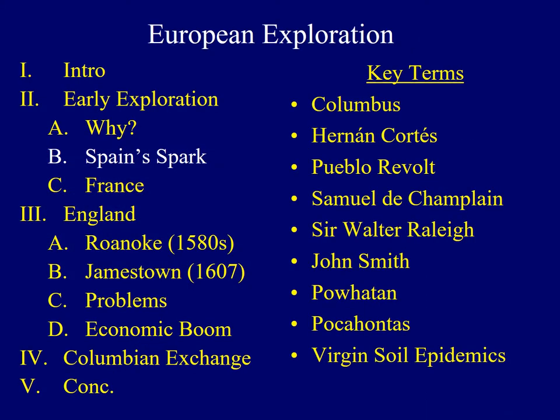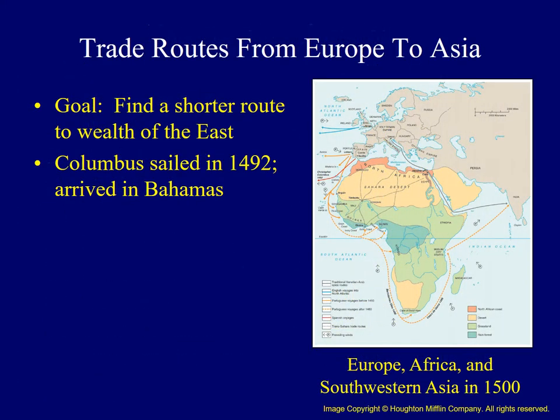Those were just a few of the general reasons why many traveled to what some called the New World. Because the Spanish established the first permanent settlement in what became the United States, we'll investigate their actions first. This map demonstrates some of the common trade routes from Europe to Asia. Because there was so much wealth to be had in the trade of spices, silk, and other precious metals, some in Europe hoped to discover shorter trade routes to the east.